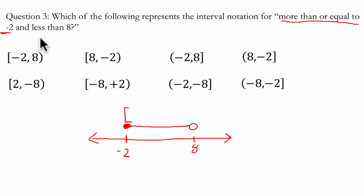And then less than 8 is an open circle, so it's a curved bracket. So we start at negative 2 and we're going up to 8, and our choice that matches is right here.